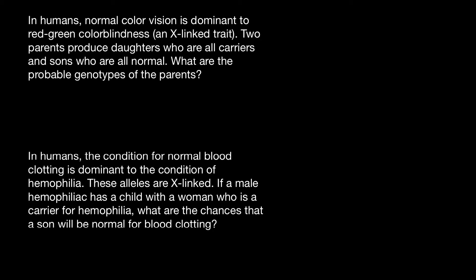Hello and welcome to Nikolai's genetics lessons. Today I have prepared two easy problems for you. The first problem: in humans, normal color vision is dominant to red-green color blindness, an X-linked trait. Two parents produce daughters who are all carriers and sons who are all normal. What are the probable genotypes of the parents?